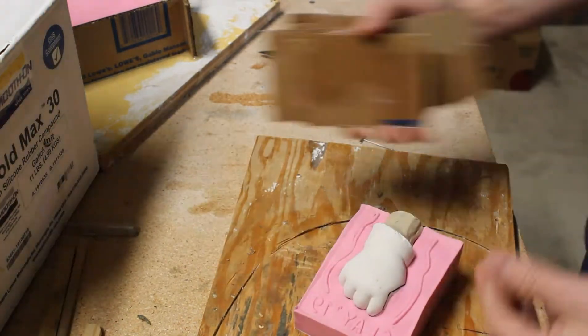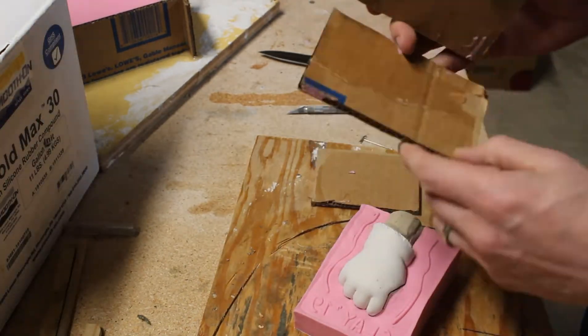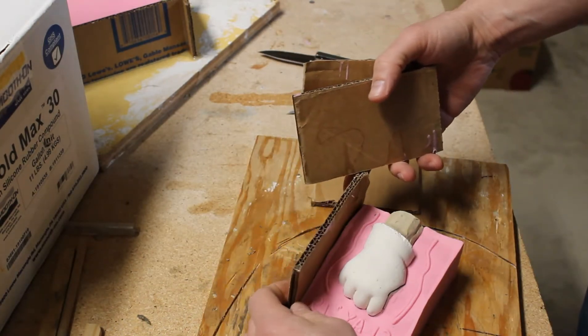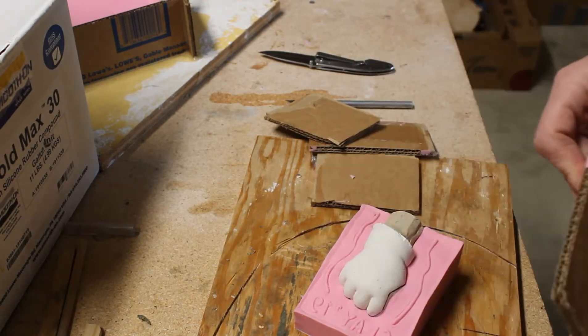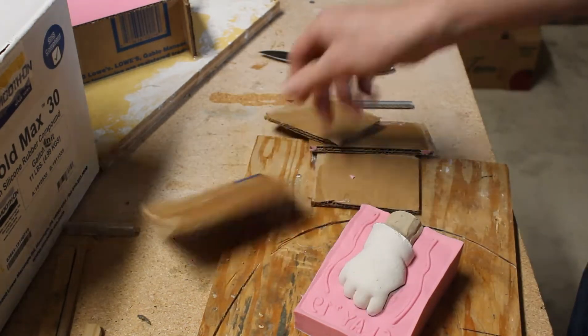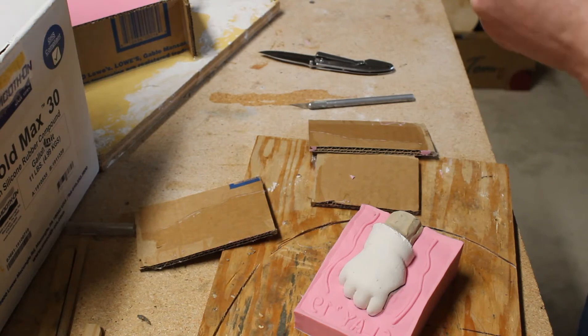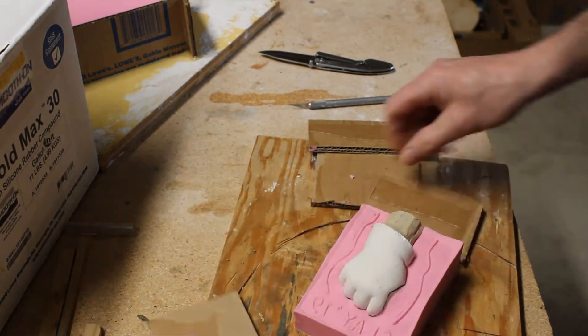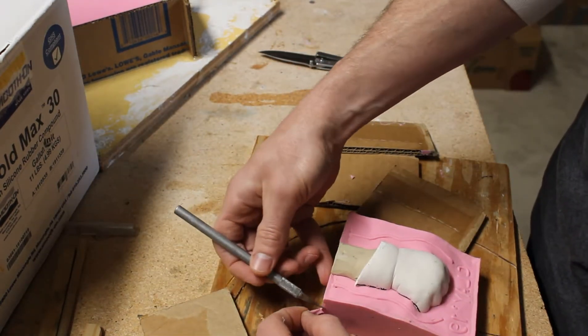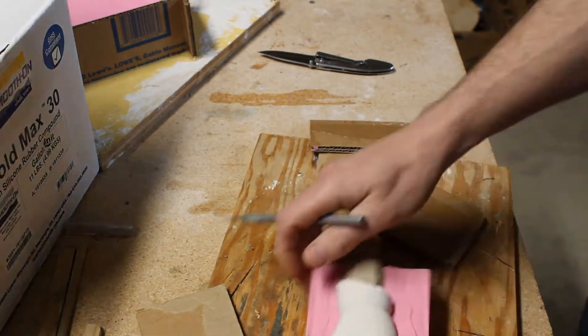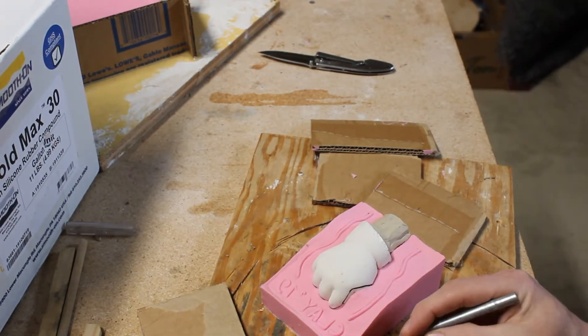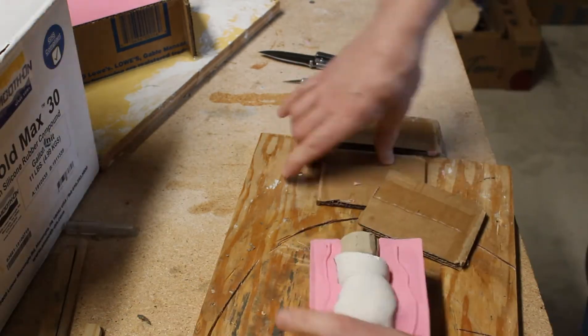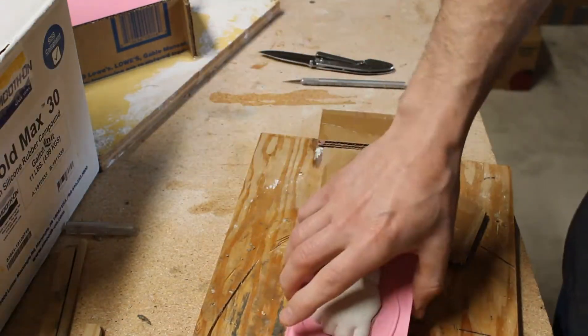Before we put the walls back up, if you would like to apply your mold release or release agent, I typically use Vaseline. Vaseline makes a great release agent. It will prevent the silicone from ever sticking to itself as long as it's on there. So you can finish getting this cleaned up and get your mold put back together.